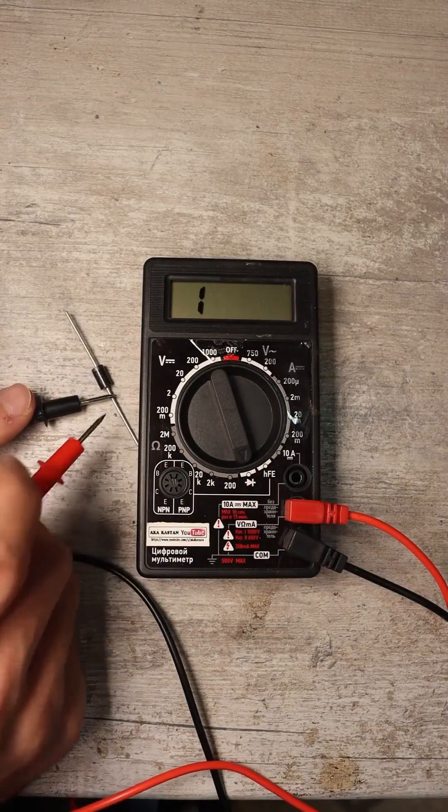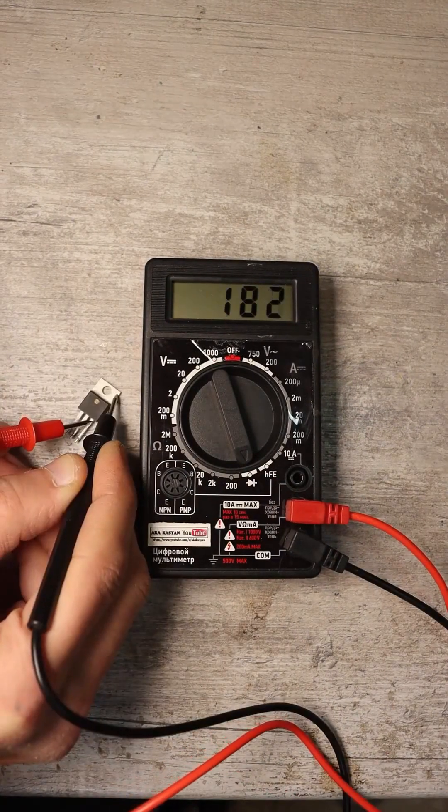If you swap the probes, the multimeter display will show a 1, indicating the diode is functioning properly.